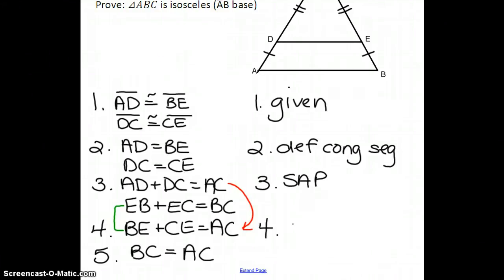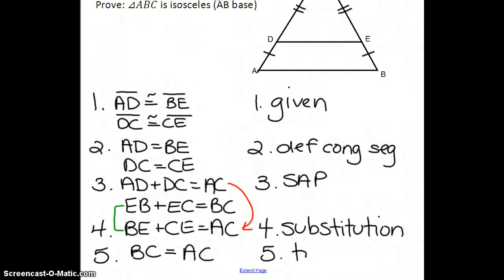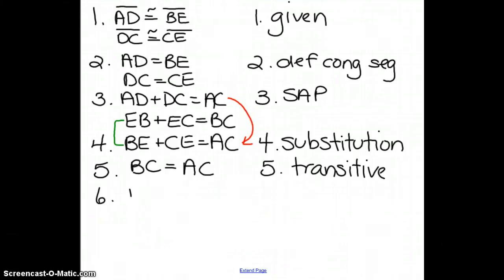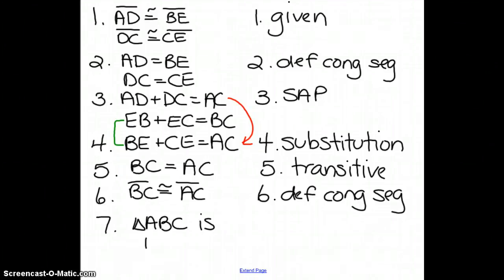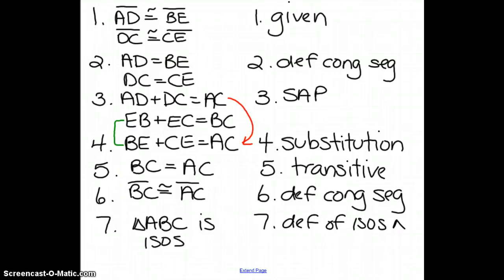Step 4 is justified by substitution, and step 5 by the transitive property. To prove the triangle is isosceles, we need to translate these equal lengths back into congruent segments using the definition of congruent segments. Now we have what we were trying to prove: triangle ABC is isosceles by the definition of an isosceles triangle.